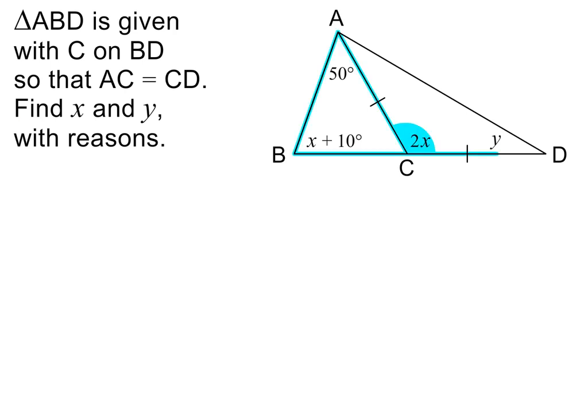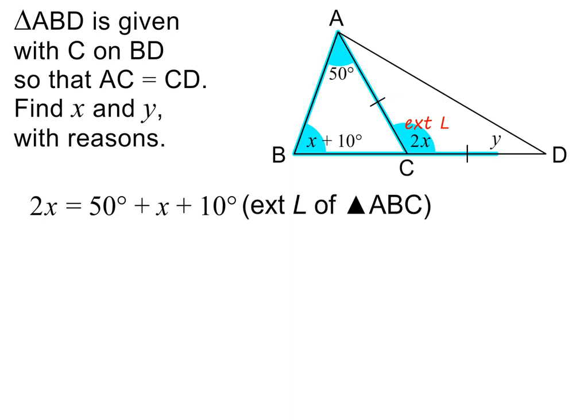To find x, we can use triangle ABC together with its exterior angle, 2x. As we have said, 2x is an exterior angle, and this is equal to the sum of the opposite interior angles: 50 degrees and x plus 10 degrees. Don't forget to write the reason in this step. To solve this equation, we begin by adding 50 degrees to 10 degrees on the right. We then subtract x from both sides. x is therefore equal to 60 degrees.